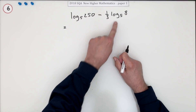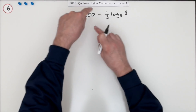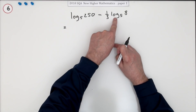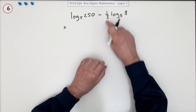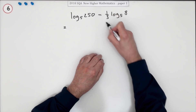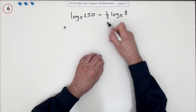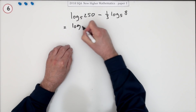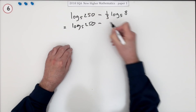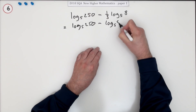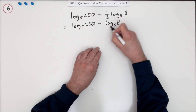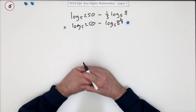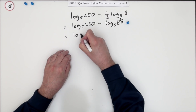Don't let that one catch your eye first — subtracting logarithms means dividing the numbers, but that only applies for a logarithm minus a logarithm, not some multiple of a logarithm. You know the other rule: a multiplying number can pop inside as a power. So the first step is log base 5 of 250 minus log base 5 of 8 to the power of one third. Doing that is worth a mark.